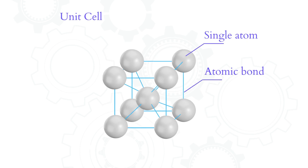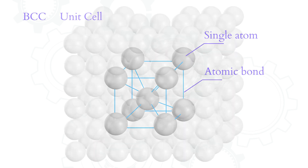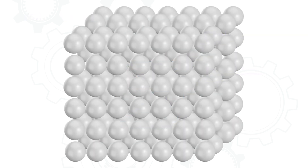This unit cell is a BCC — body-centered crystal structure — which is called so because of the atom in the middle of it. This is a very common structure in steels. Let us zoom out a bit to a connection of unit cells, and also change the view from 3D to 2D for simplicity.